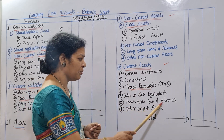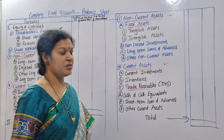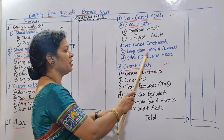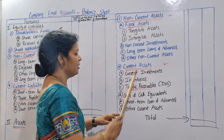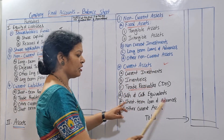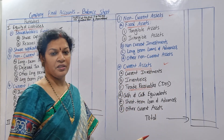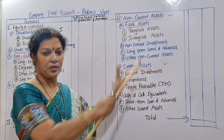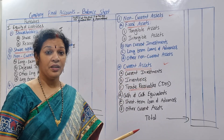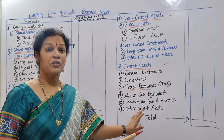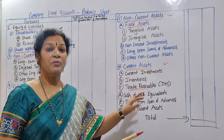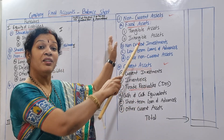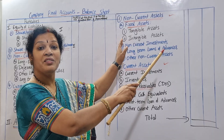Fifth is short-term loans and advances — compared to long-term loans and advances under non-current assets, here we have short-term loans and advances.